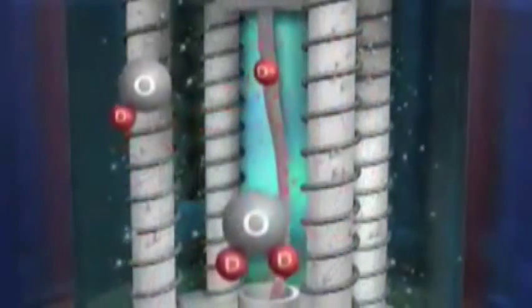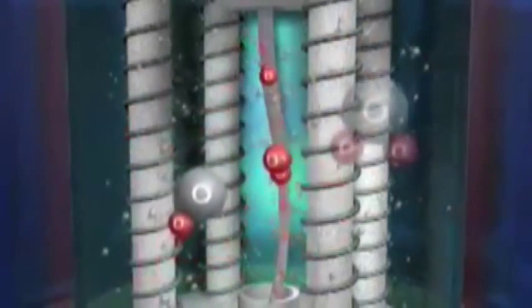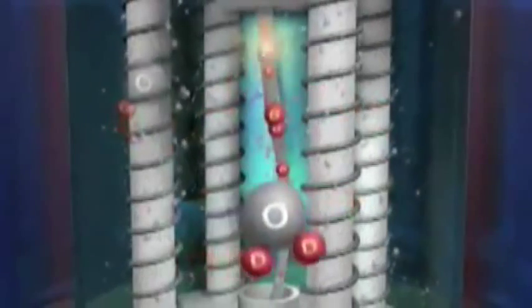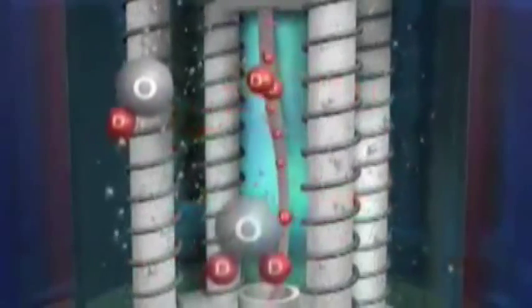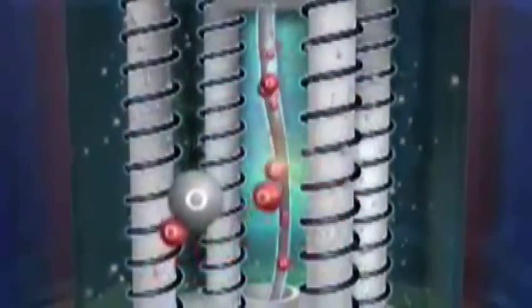Simultaneously, new D2O molecules are dissociated in the electrolyte into more OD negative and D positive ions, so the process continues as long as the voltage is applied.